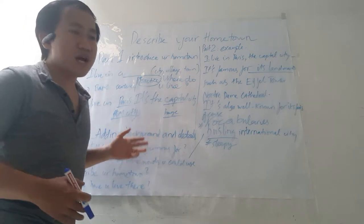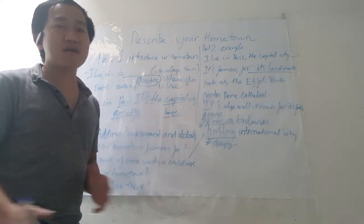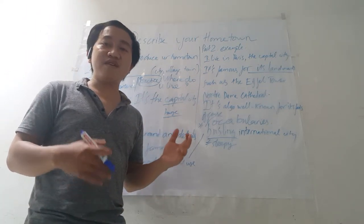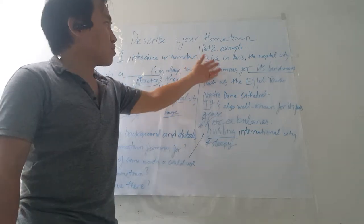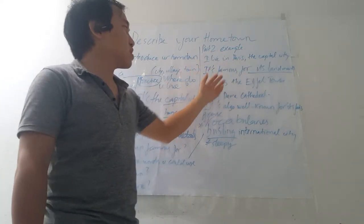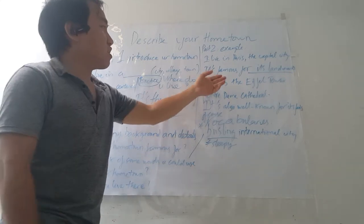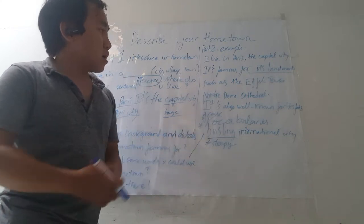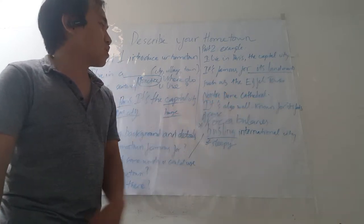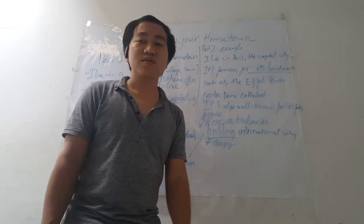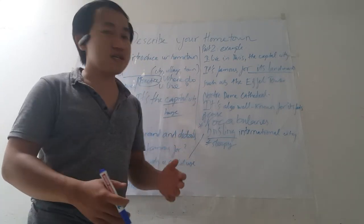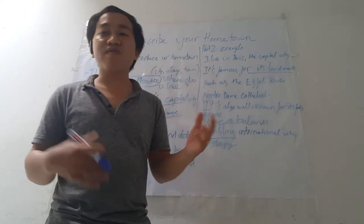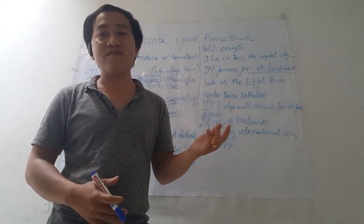Here are some ideas to make your answers longer and more detailed. For example: I live in Paris — it's a capital city. It's famous for its landmarks such as the Eiffel Tower and the cathedral. It's also well known for its culture. I live in Shanghai — it's a huge business and international city. People from all over the world live and work there.